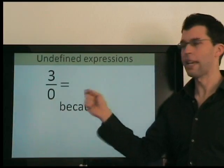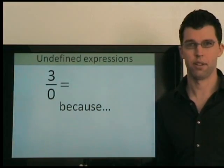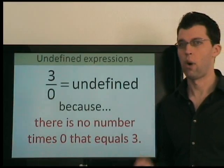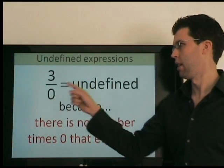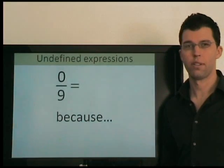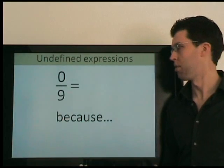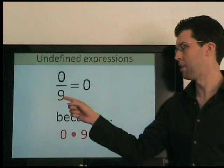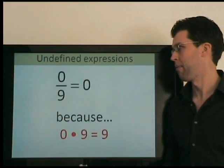So just a few more. 3 divided by 0, what's the answer? Well, there is no answer. Why? Because there is no number times 0 that equals 3. What's the answer here and why? Well, 0 because 0 times 9 equals 0.